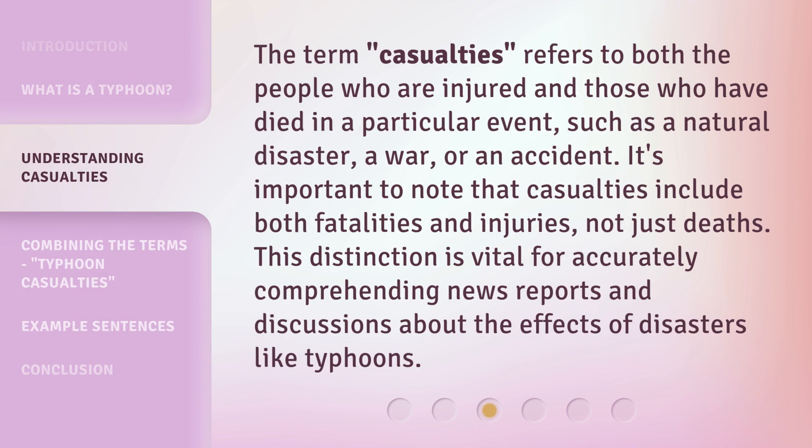The term casualties refers to both the people who are injured and those who have died in a particular event, such as a natural disaster, a war, or an accident. It's important to note that casualties include both fatalities and injuries, not just deaths. This distinction is vital for accurately comprehending news reports and discussions about the effects of disasters like typhoons.